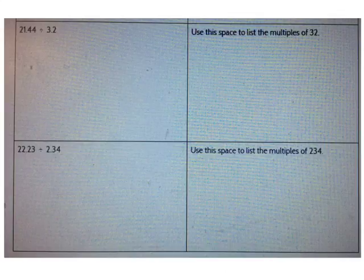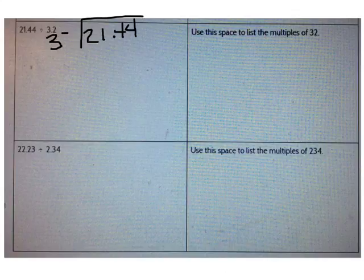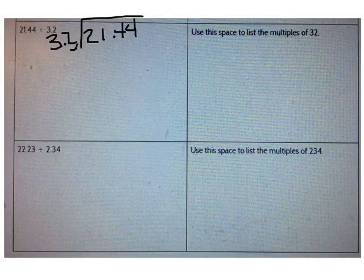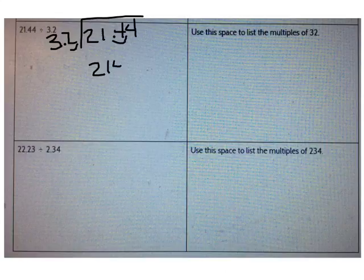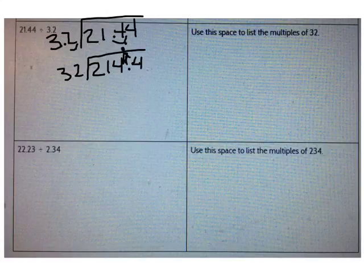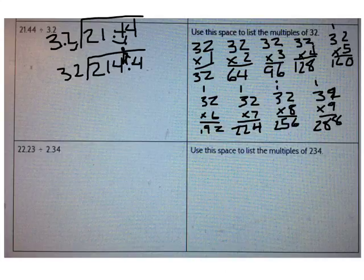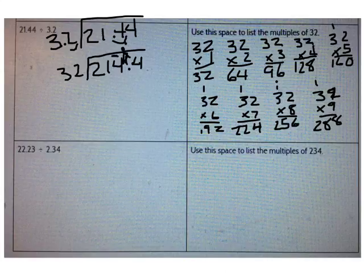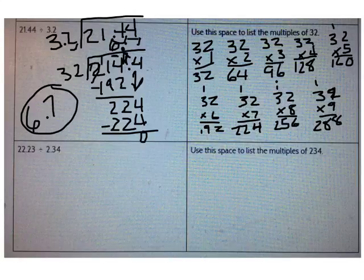Now we're going to try two decimal division problems. Let's start with 21 and 44 hundredths divided by 3 and 2 tenths. First, I need to create my new problem. How many times do I need to move the decimal? I need to move the decimal one time. So my new problem is 214 and 4 tenths divided by 32. Now I can list the multiples of 32. Go ahead and do that now. Check your multiples with mine. Now let's decide the correct place to start dividing — we'll start in the ones place. Go ahead and solve this division problem now. The correct answer is 6 and 7 tenths. Check your work with mine.